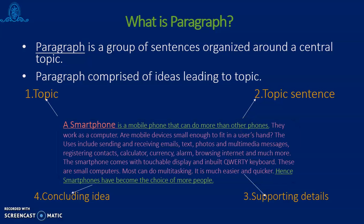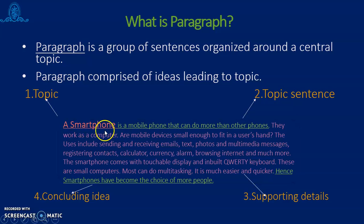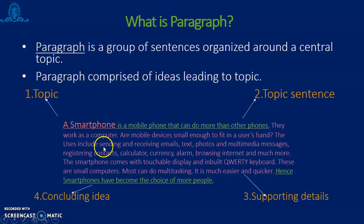So, what is a paragraph? A paragraph is a group of sentences organized around a central topic. Generally, paragraphs are written over a given topic and related to that, different sentences are given. A paragraph is comprised of ideas leading to the topic. Here you can see a sample paragraph given for the purpose. I have used highlighted colors: the very first word, 'smartphone', indicates this is the topic of the paragraph. The green color given to the sentence indicates this is the topic sentence, and the last one is your concluding sentence or concluding idea. The pink color used for the text indicates all are the supporting details.